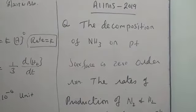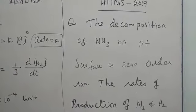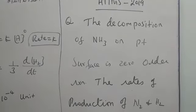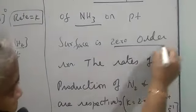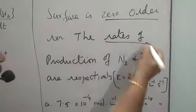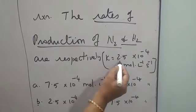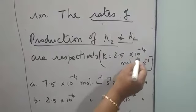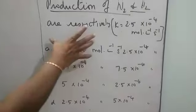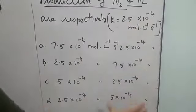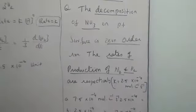The next question is regarding chemical kinetics, AIIMS 2019. This is a somewhat interesting, easy, but tricky question — this type of pattern we can expect. Let us see the question. The decomposition of ammonia on a platinum surface is a zero order reaction. The rate of production — that is, formation — of nitrogen and hydrogen respectively is to be found, given rate constant K = 2.5 × 10⁻⁴ mol/L/s, which is the unit for the rate of a zero order reaction.